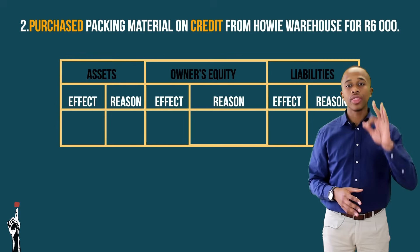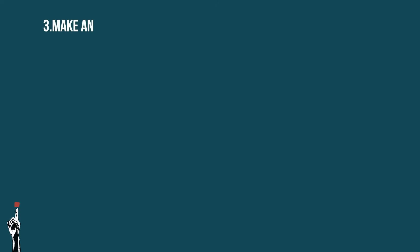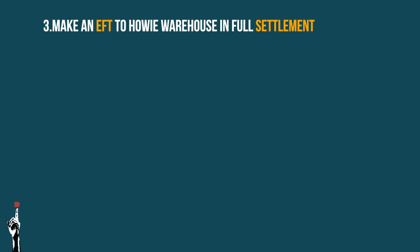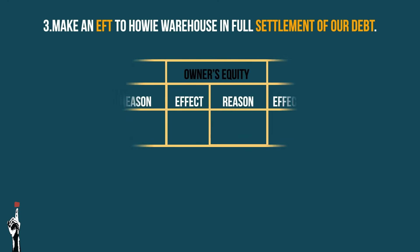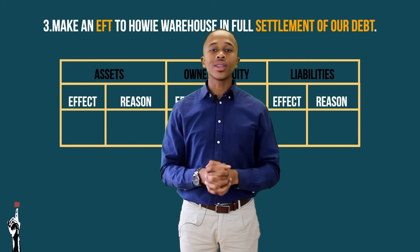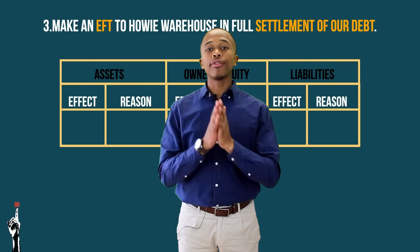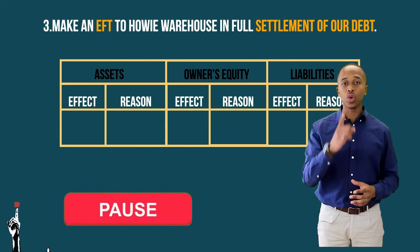Answer in three, two, one. Packaging material is an expense and will decrease the owner's equity. It was also bought on credit, which means the business liability will increase. Transaction three: make an EFT to Howie Warehouse in full settlement of our debt. Remember, for the previous transaction the debt was R6,000 — keep that in mind. Remember the pause button.